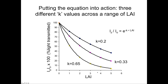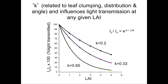In all cases, as LAI increases, light availability decreases. There are two key trends: LAI increasing leads to less light, but how much light is attenuated versus transmitted depends on the K value of that forest. K is related to the clumping, distribution, and angle of the leaves, and it influences light transmission at any particular LAI value.